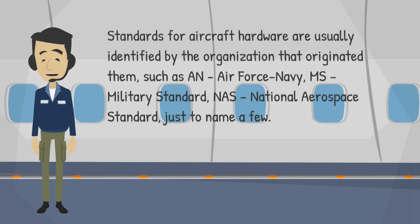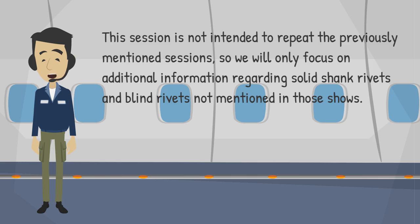Standards for aircraft hardware are usually identified by the organization that originated them, such as AN (Air Force Navy), MS (Military Standard), and NAS (National Aerospace Standard), just to name a few. This session will only focus on additional information regarding solid shank rivets and blind rivets not mentioned in those previous shows.